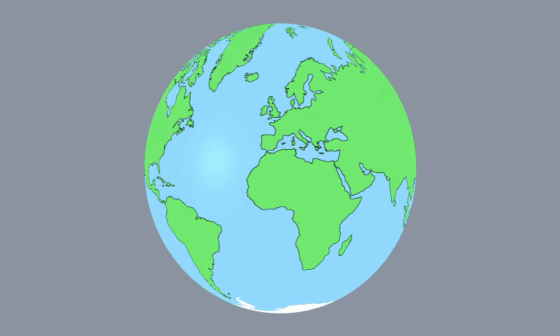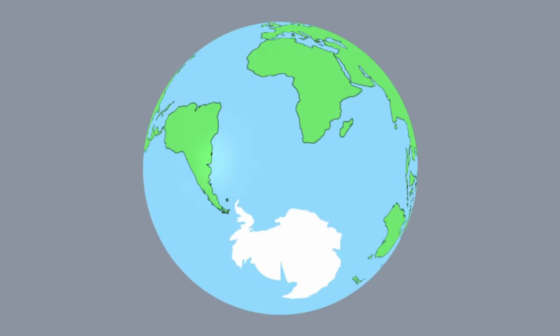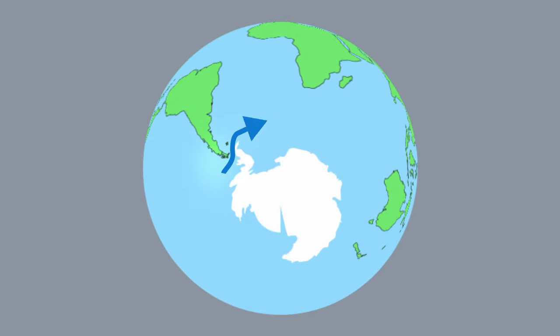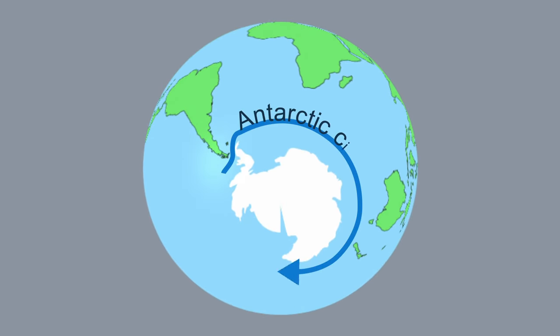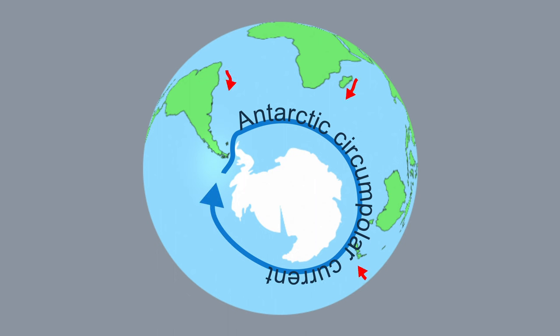Around Antarctica, seawater flows in a large circle called the Antarctic Circumpolar Current. This current prevents warm water from reaching Antarctica, causing it to cool much further than the North Pole.